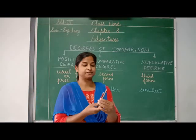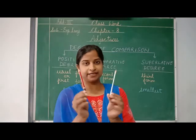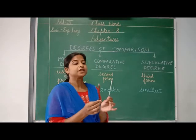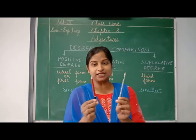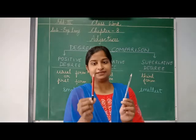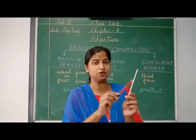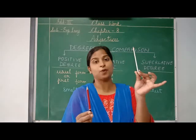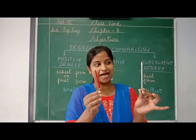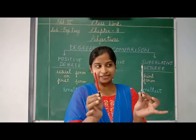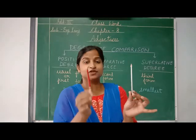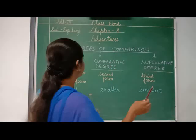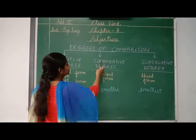Now, if we take two pencils — there are two pencils. I am going to compare these two pencils. Which one is smaller? This is smaller. This is small in size compared to this pencil. So, this is smaller. This is the positive degree, and this red pencil is smaller than the black pencil — that is the comparative degree.